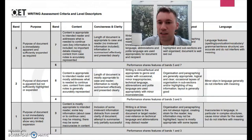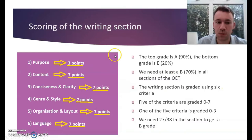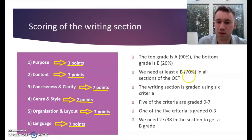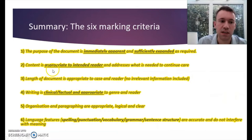This is really just summarising what we've just seen. Purpose is only worth three points. The other five criteria are worth seven points each. And if we want to get that B grade, then we need 70%. A B is what is accepted, at least by the General Medical Council in Britain — if you get a B, you're in. You can start moving forward with the process of working in English or British hospitals. Here's a summary of everything that we just saw: these are the six criteria that the OET uses to assess you.